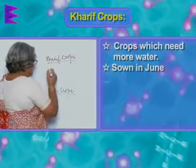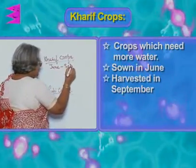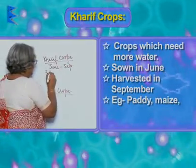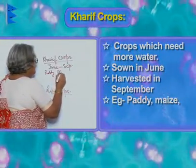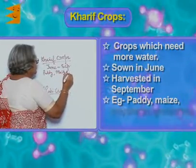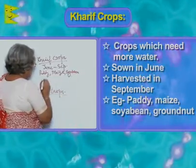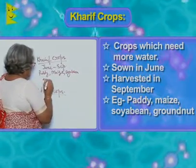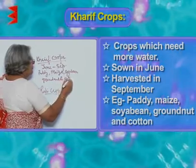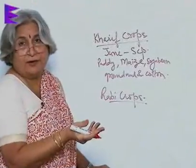Kharif crops are sowed in June and harvested in September. Examples include paddy, maize, soybean, groundnut, and cotton. We know they need more water.